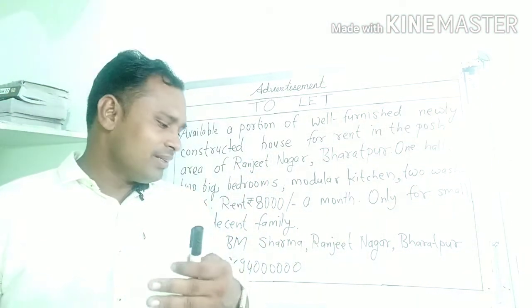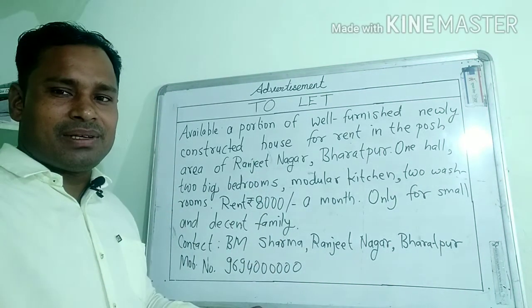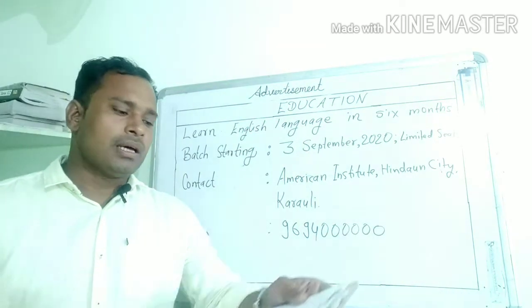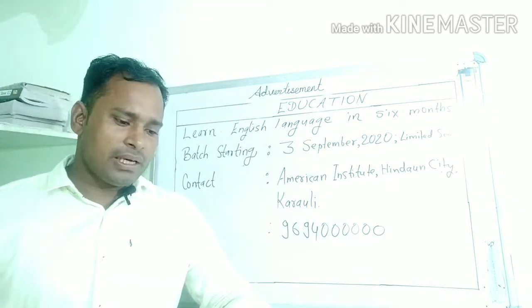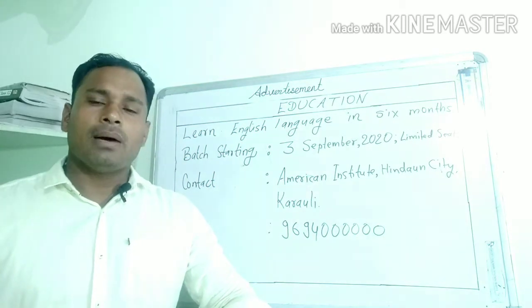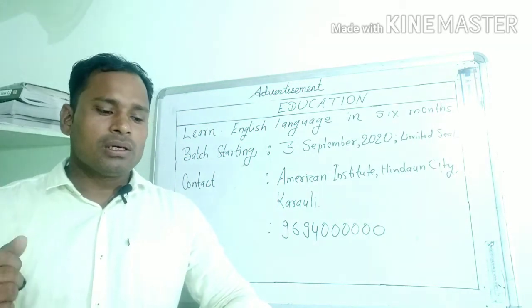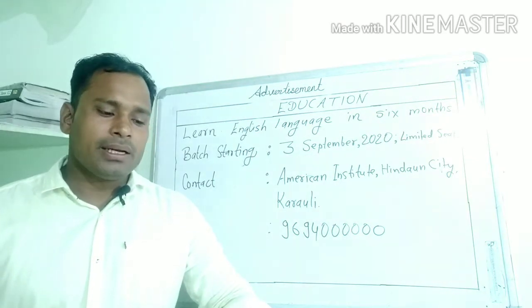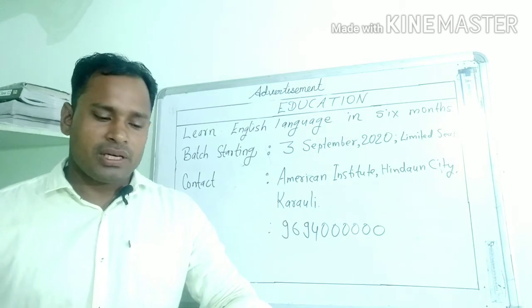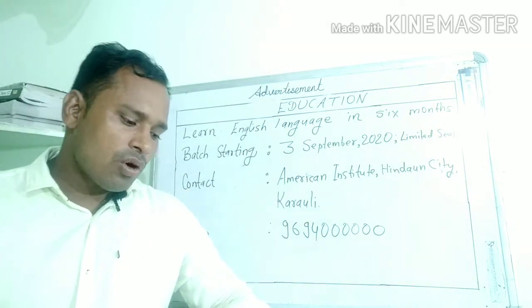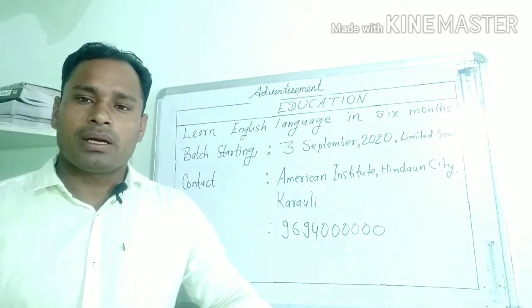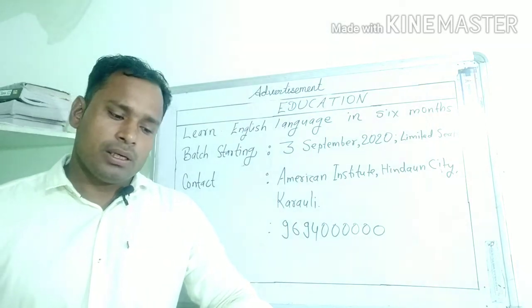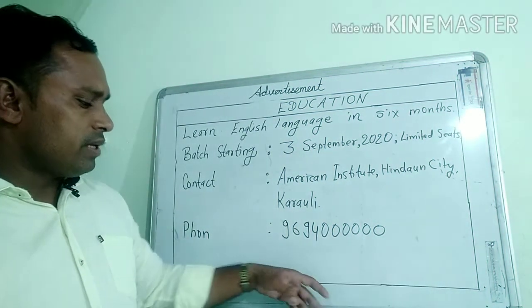इसके बाद हम देखते हैं Advertisement Number 2। अगर question आता है — यानि आपका अंग्रेज़ी भाषा सिखाने का संस्थान है, you will arrange a new batch — आप एक नया batch शुरू करेंगे। Write an advertisement for the educational columns of a local newspaper — एक local अखवार के educational column के लिए एक विज्ञापन लिखना है।